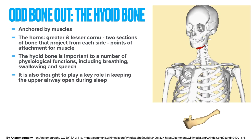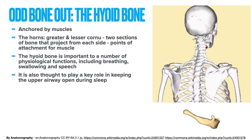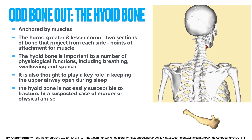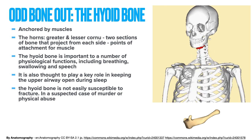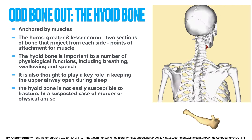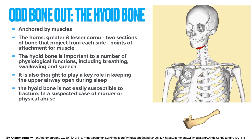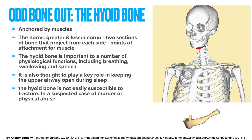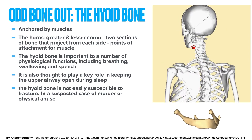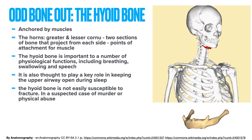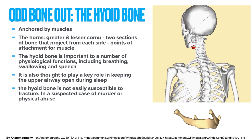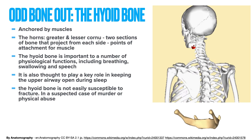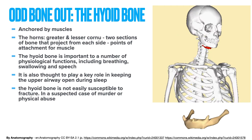It's also thought to play a key role in keeping the upper airway open during sleep. The hyoid bone is not easily susceptible to fracture due to its location. However, whenever it has been fractured, it strongly indicates that strangulation has occurred, specifically in an adult. In children and adolescents, the hyoid bone is a little more flexible because ossification isn't complete, so strangulation may not result in a fracture. But during an autopsy, if a hyoid bone in an adult is found to be fractured, it makes a really good case for murder.